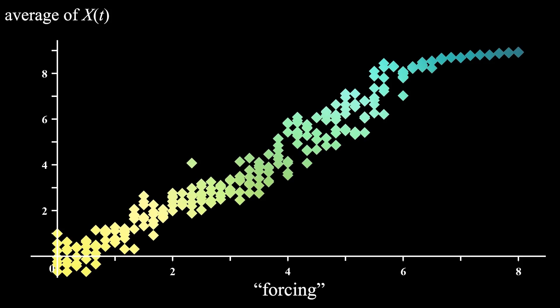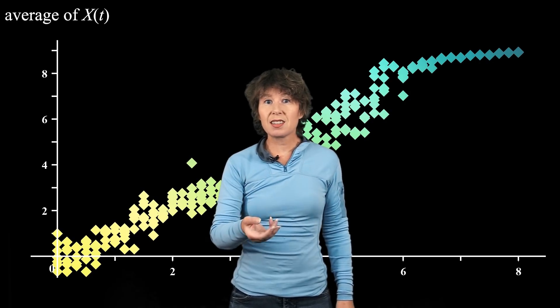What this means is that in a chaotic system, the trends of average values can be predictable even though you cannot predict the exact state of the system beyond a short period of time. And this is exactly what is happening in climate models.